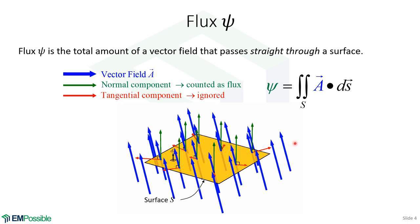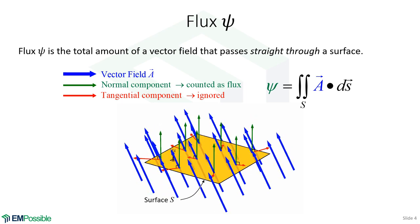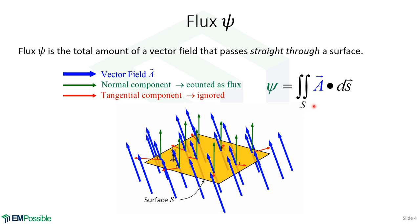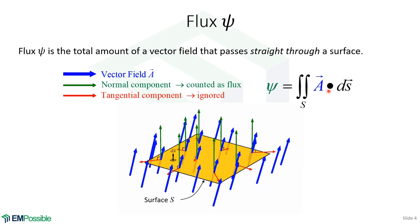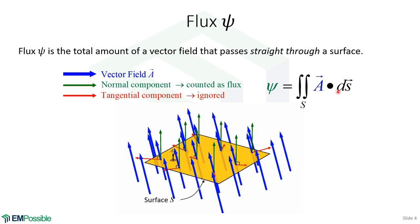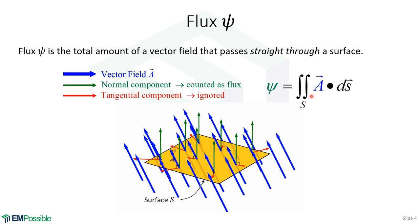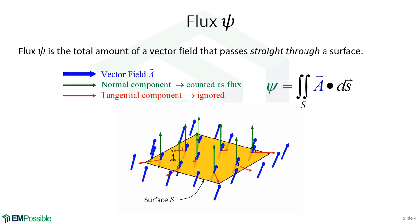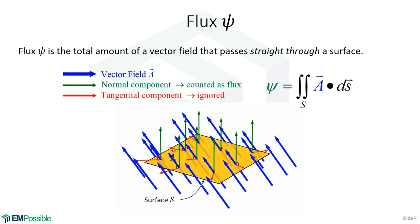We integrate the normal components across the entire area, and that overall sum is the flux. The tangential components are completely ignored. We can see this in the equation for flux: the double integral means we're integrating over that surface, A is the field we're analyzing, and we do a dot product with the differential surface element dS. That differential surface has a differential area and a direction perpendicular to the surface. So the dot product picks out the component of A perpendicular to the surface, multiplied by the differential area. That is flux.